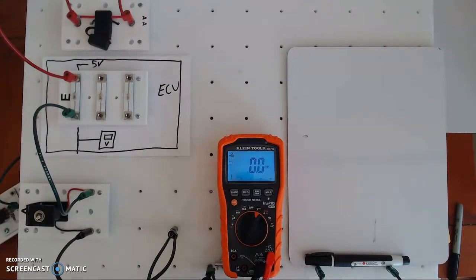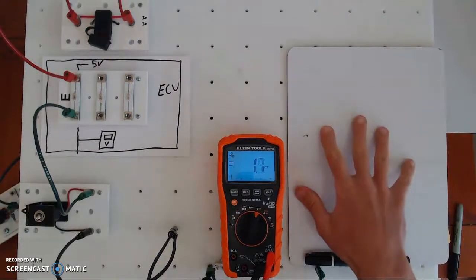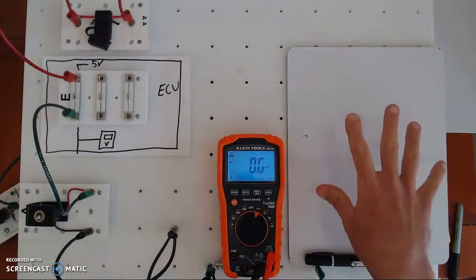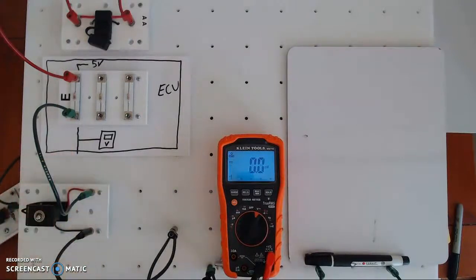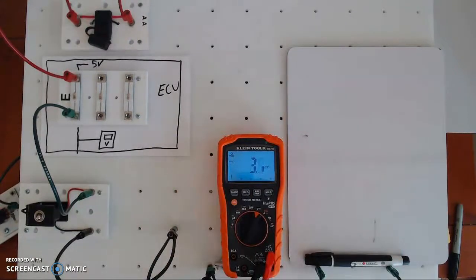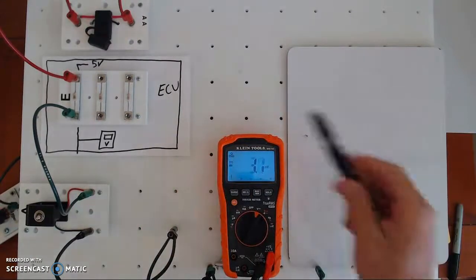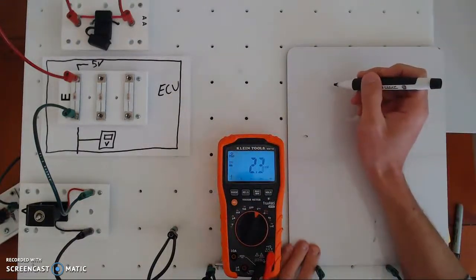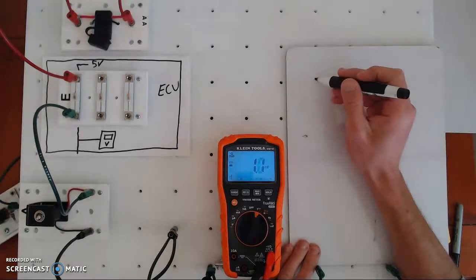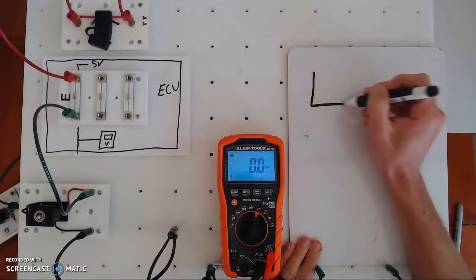As usual I have my whiteboard right here to show the electrical schematic. On the left I have the actual circuit built out, and in the middle I have my voltmeter — this is me, the tech, trying to diagnose it. Here's the circuit on the left, and I'm going to draw what's going on on the right.